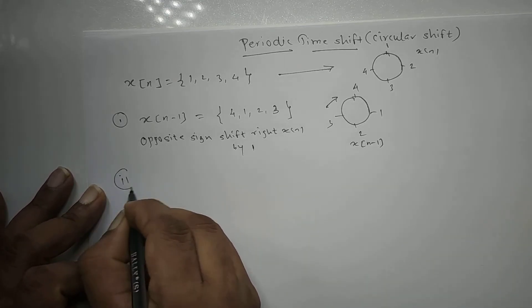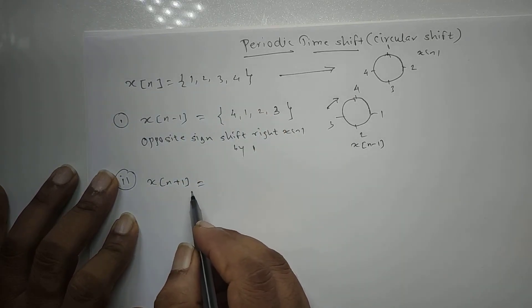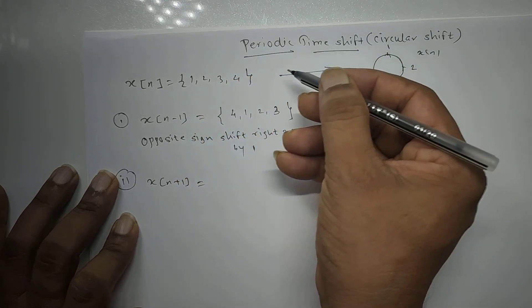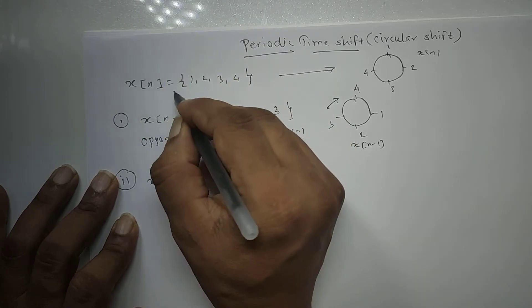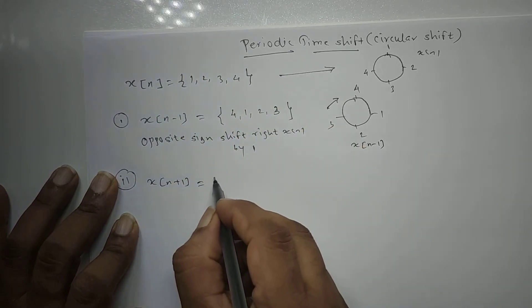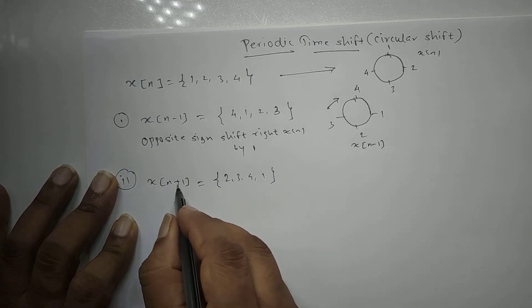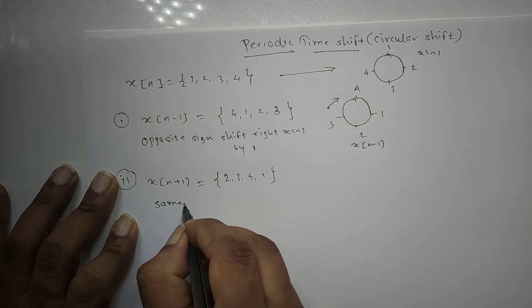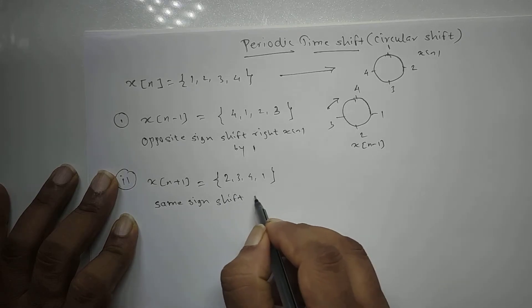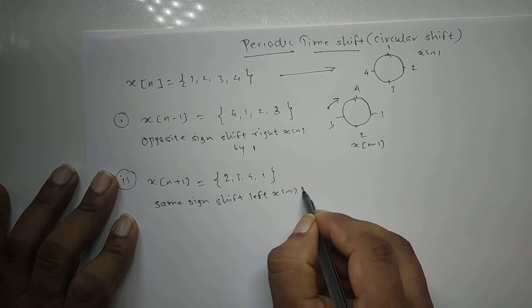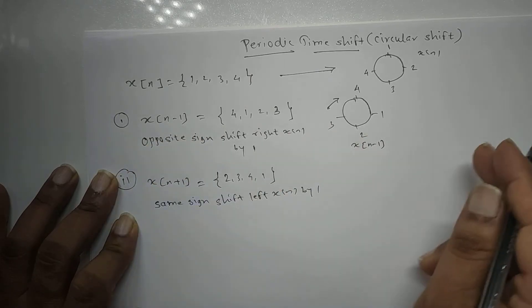For x[n+1]: n and the constant both have plus sign - same sign. Same sign means shift left by 1. Left shift is anti-clockwise rotation on the circle. Anti-clockwise rotation by 1 brings 2 to the front, giving x[n+1] = {2, 3, 4, 1}. So same sign → shift left → anti-clockwise rotation.